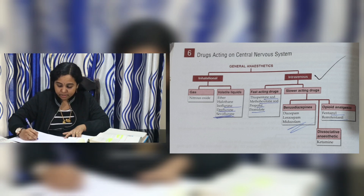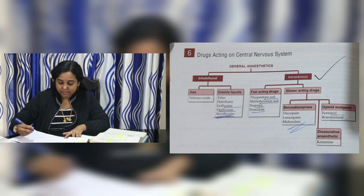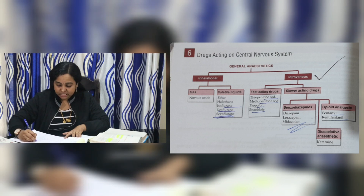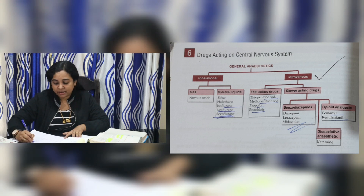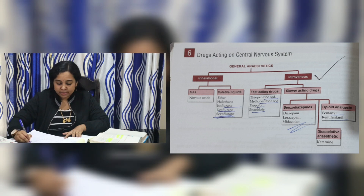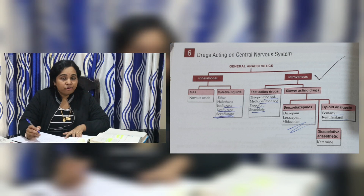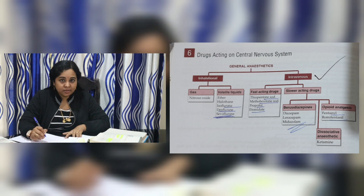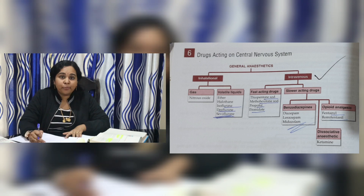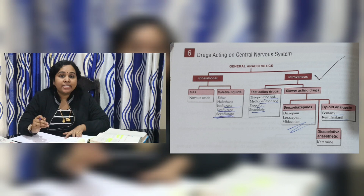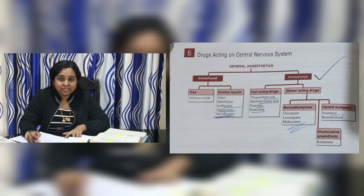The slower-acting drugs are classified into three ways: benzodiazepines, dissociative anesthetics, and opioid analgesics. Fast-acting drugs are also classified in three ways under intravenous anesthetics.